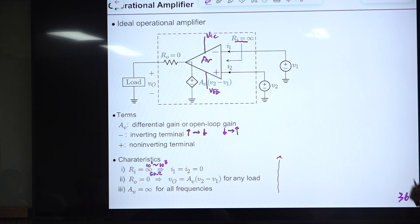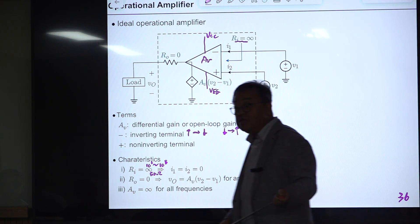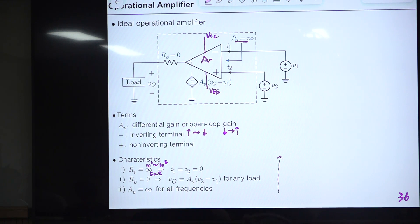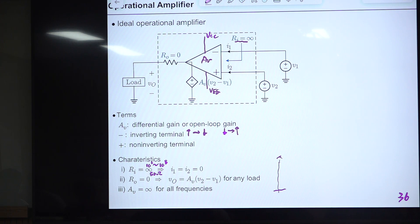Another configuration is the non-inverting amplifier, where the input signal is applied to the non-inverting terminal and feedback goes to the inverting terminal. There is no minus sign in the gain. The voltage gain is 1 + R_2/R_1, which is always larger than one. A special case is the unity-gain buffer, where output is directly connected to the inverting terminal, giving gain of exactly one.